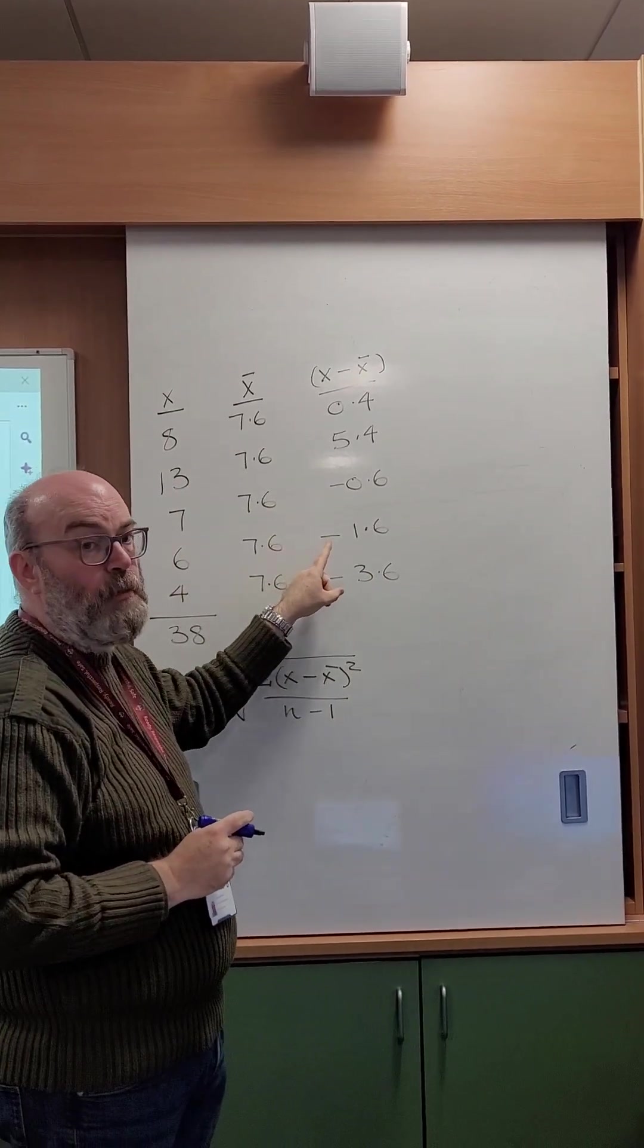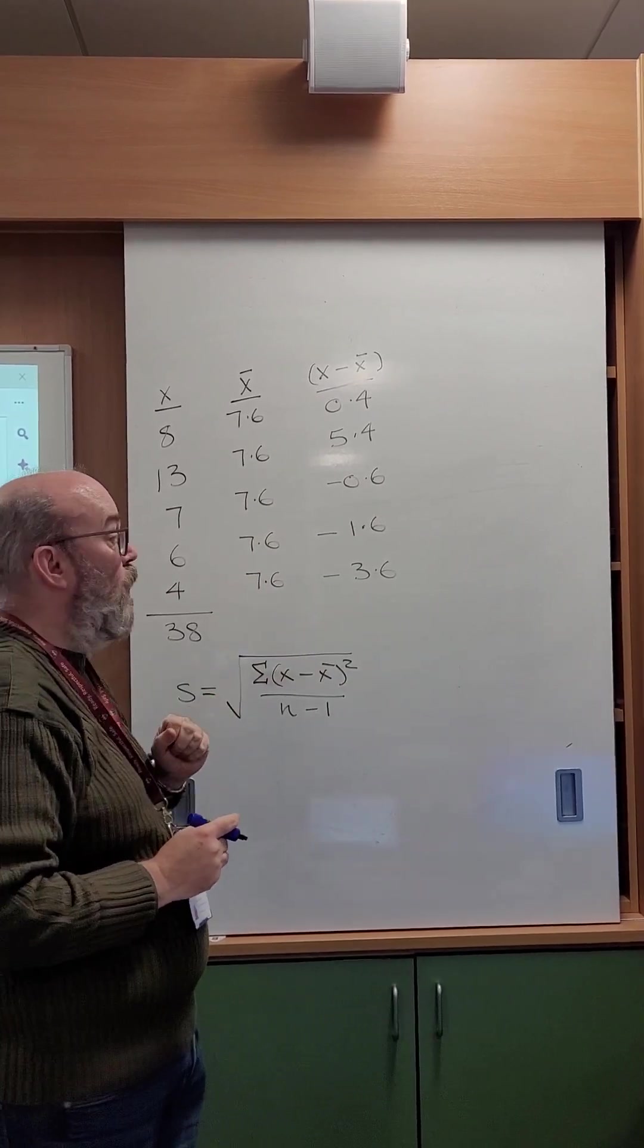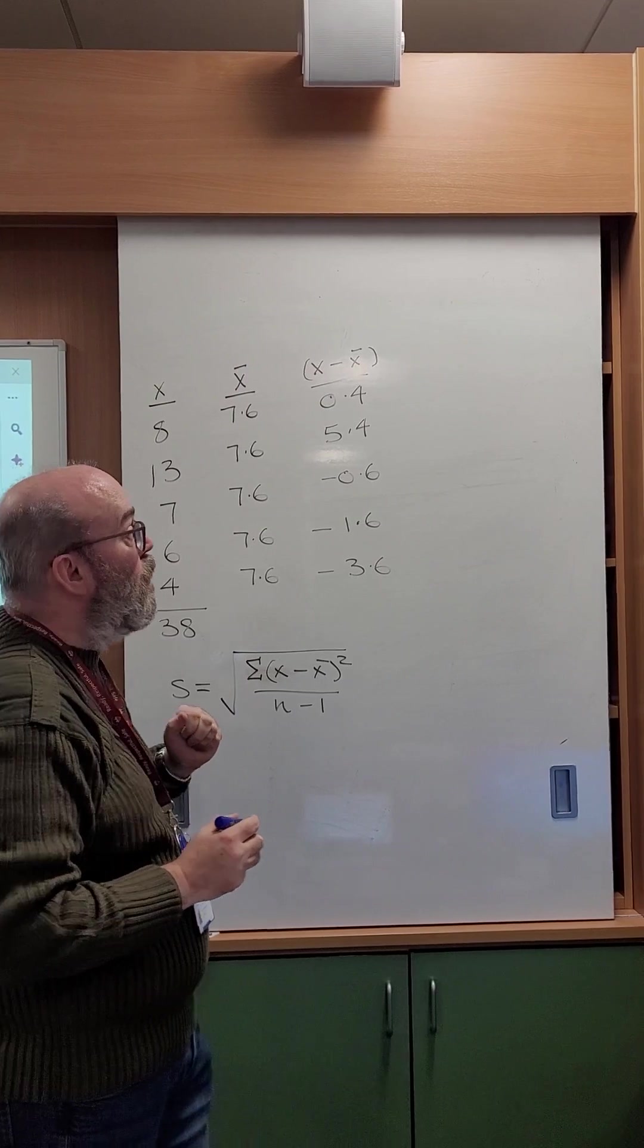Now because these are negative, we have to square them and then use the square root part to allow us to have only a positive value.